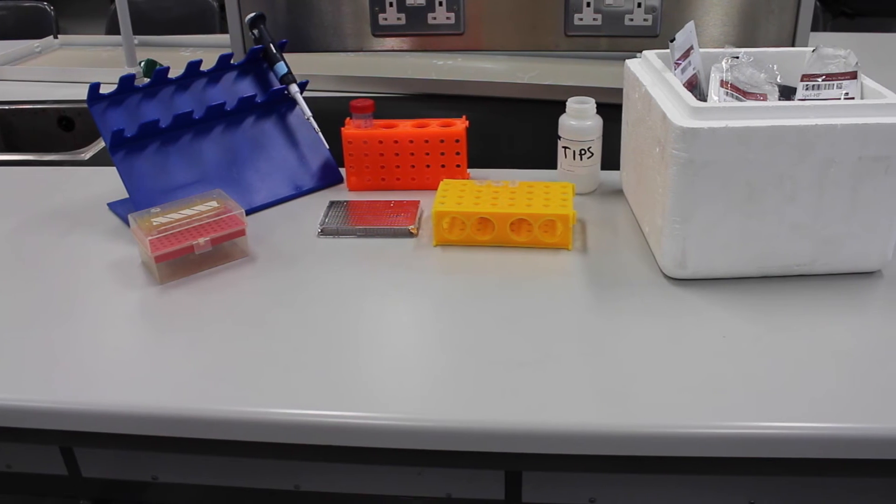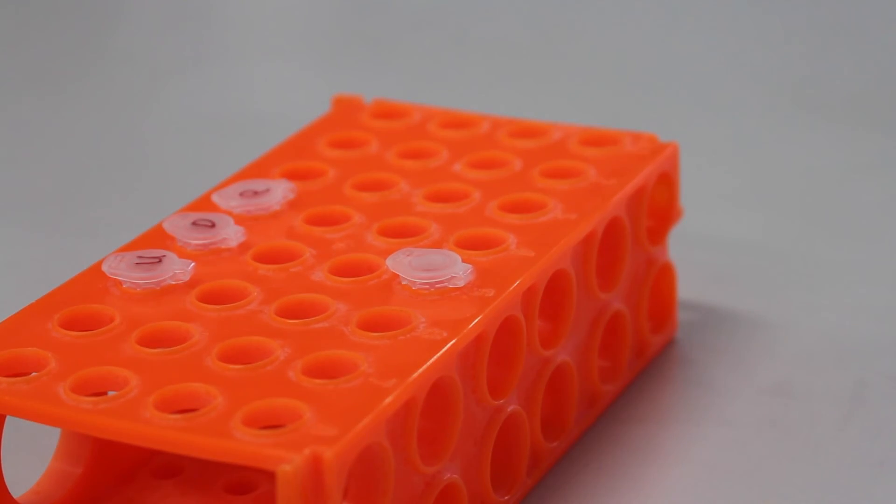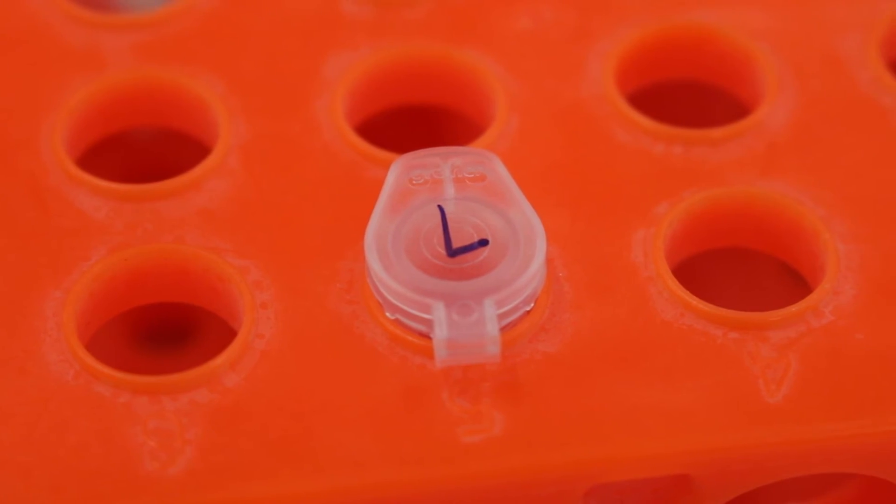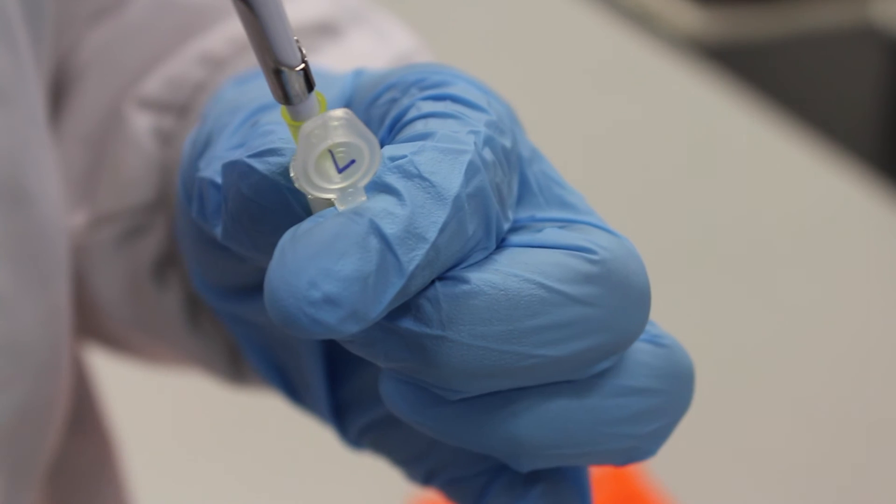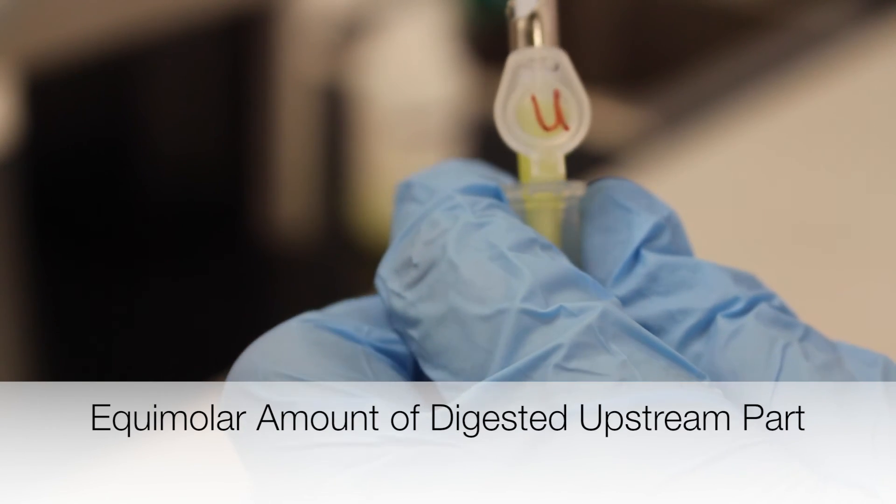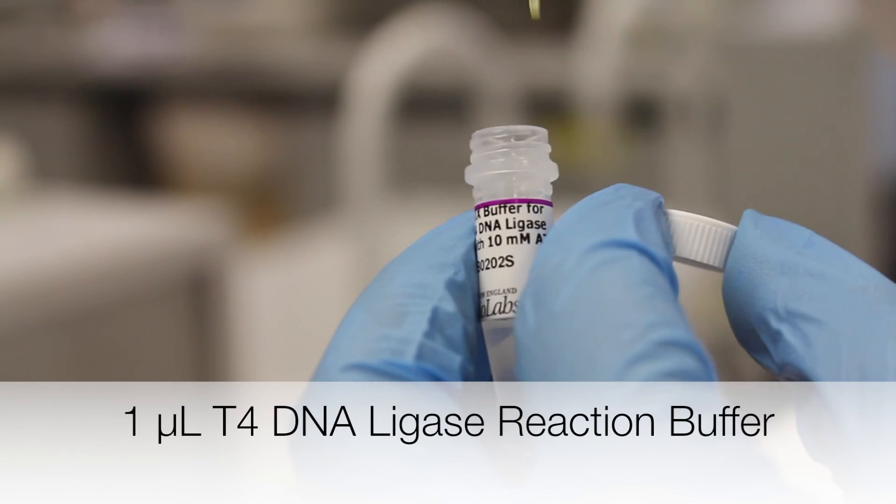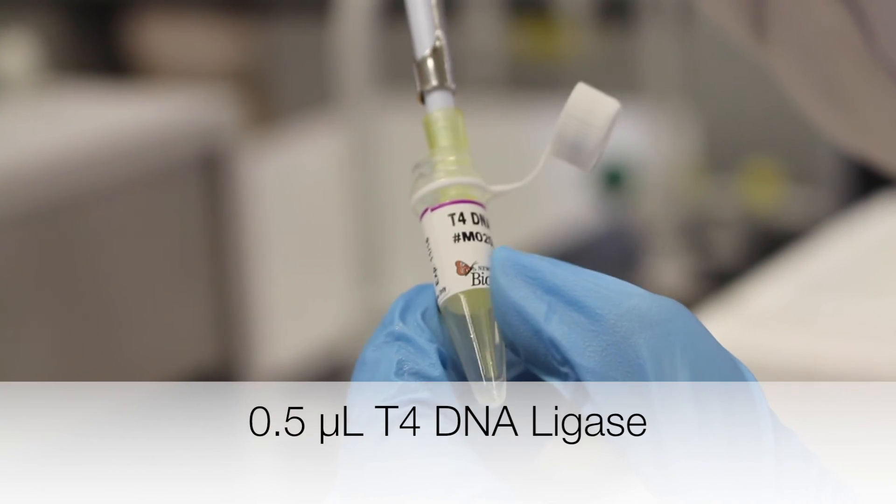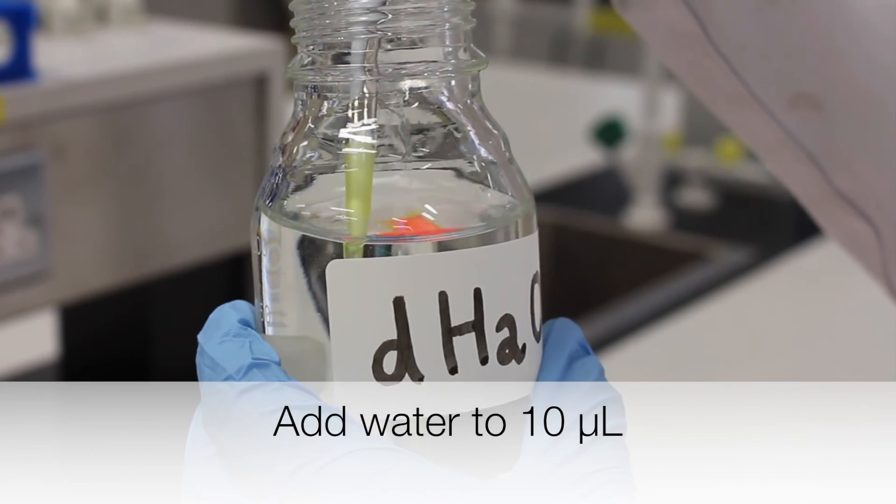In the ligation step, the enzyme T4 DNA ligase joins the digests together. For the ligation protocol, a new Eppendorf tube is taken and labeled L for ligation. The following are added to tube L: 2 microliters of the digested plasmid backbone, an equimolar amount of the upstream part, an equimolar amount of the downstream part, 1 microliter of T4 DNA ligase reaction buffer, 0.5 microliters of T4 DNA ligase, and add water to 10 microliters.